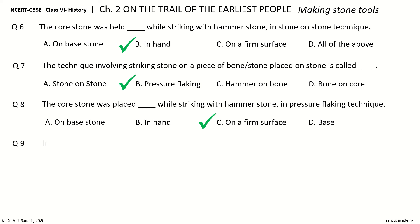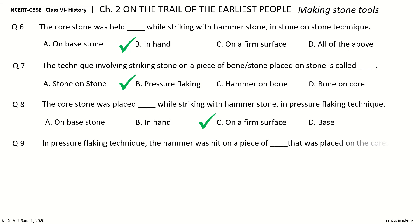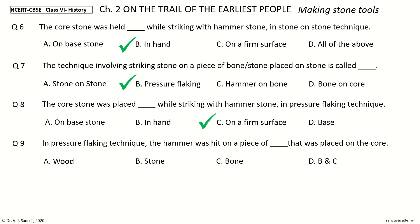Question 9: In the pressure flaking technique, the hammer was hit on a piece of dash that was placed on the core. The options are: wood, stone, bone, B and C. And the answer is B and C.